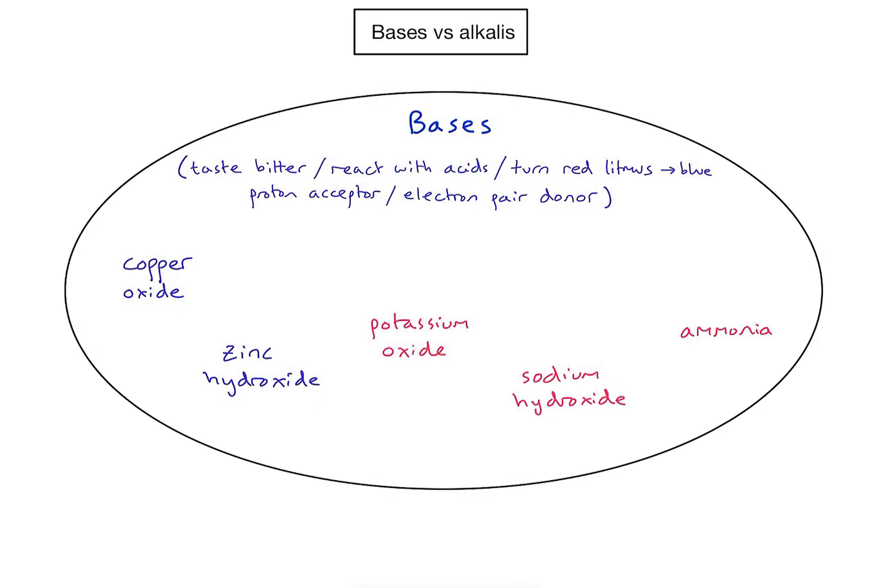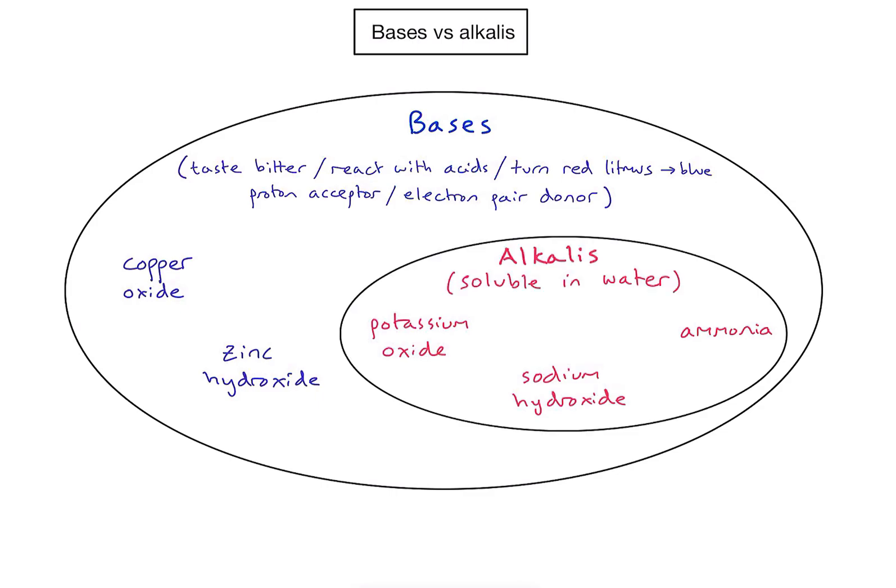However, you'll notice the three on the right have been written in a slightly different colour, and that's because there's one further layer of classification we can add. These three bases in pink are actually all soluble in water. So if I have a base that is soluble in water, we can call those alkalis. Looking at my Venn diagram here, I can see that the alkalis circle is within the bases circle, which means that all alkalis are also bases.